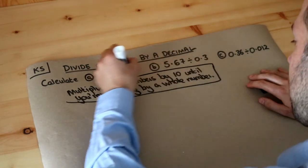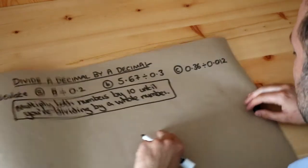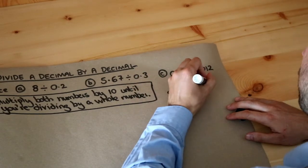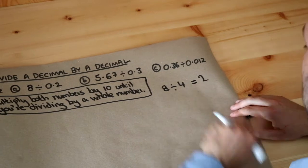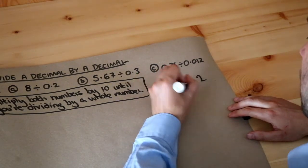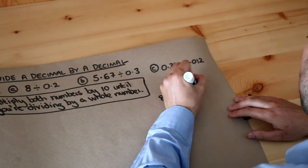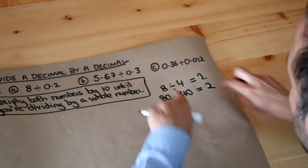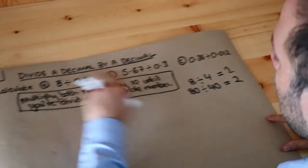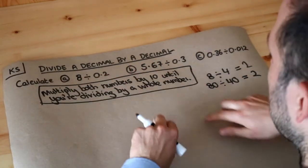Let me demonstrate that this definitely works. Let's suppose we had 8 divided by 4 equals 2, that's clearly true. Well, if we multiply both of these by 10, we get 80 divided by 40. How many times does 40 go into 80? It goes in twice, the answer's still 2. So if we multiply both numbers by 10, it doesn't change the result, we don't affect the answer.